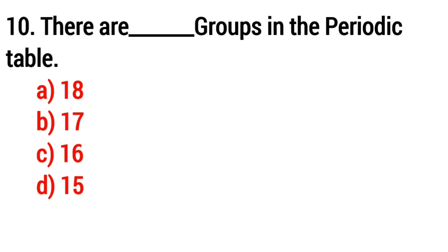Question 10: There are how many groups in the periodic table? The answer is Option A: 18.